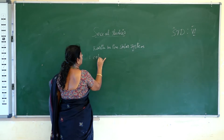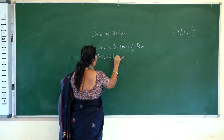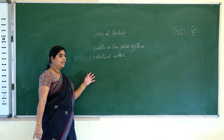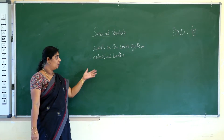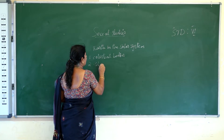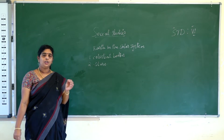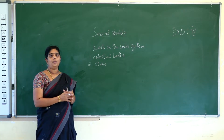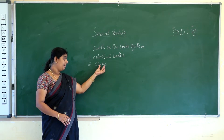We saw about celestial bodies — what are celestial bodies? The sun, moon and other objects in the sky are called celestial bodies. We also saw about stars. Stars are twinkling because of turbulence. Turbulence is nothing but the unsteady movement of air in the earth's atmosphere. That is why stars twinkle.